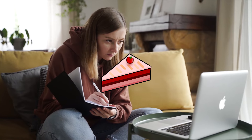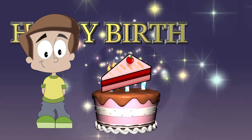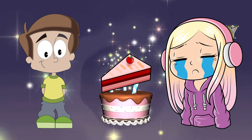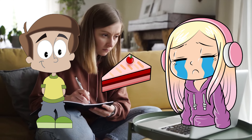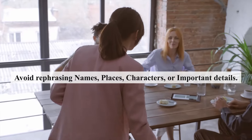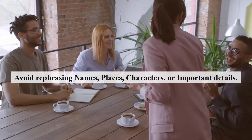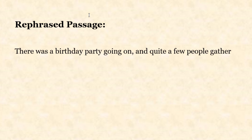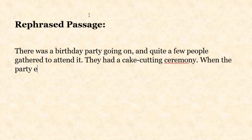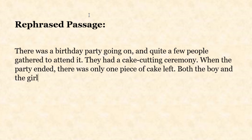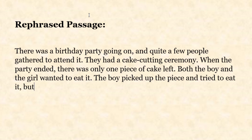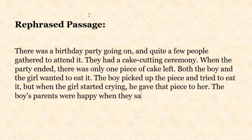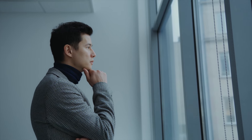Let's apply this to our sample story. A birthday party is going on where many people have gathered. There is a cake cutting and one piece of cake is left, which both the boy and the girl want. The boy takes the piece of cake, but when the girl starts crying, he gives it to her, and the boy's parents are very happy. Note that for important things like names, places, or characters, you cannot rephrase easily. Here's how you reconstruct it: 'There was a birthday party and quite a few people gathered. They had a cake cutting ceremony. When the party ended, there was only one piece of cake left. Both the boy and the girl wanted to eat it. The boy picked it up but when the girl started crying, he gave the piece of cake to her. The boy's parents were happy when they saw that.'